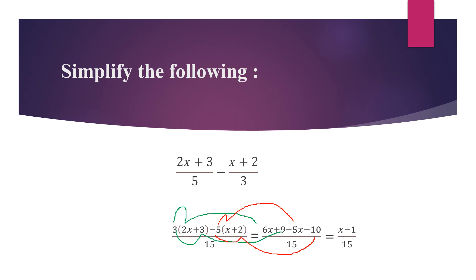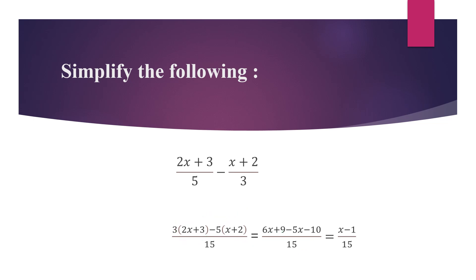Moving along, we now group the like terms. 6x minus 5x gives an answer of x, and 9 minus 10 gives an answer of minus 1. So the answer here would be (x − 1) all over 15. That is the solution — the simplified algebraic fraction.